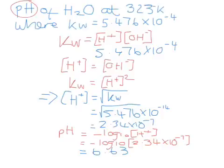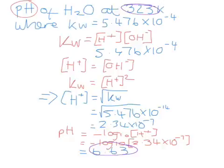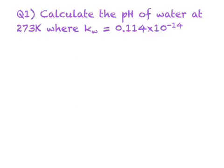At a higher temperature we've actually got a lower pH, but this doesn't mean that water is acidic at 323 K — it's always neutral, because it has an equal number of hydrogen ions and hydroxide ions. This tells us that water is neutral at pH 6.63 at 323 K, and at boiling point at 373 K it is neutral at pH 6.14. I'd like you to be able to answer this question for the next lesson.